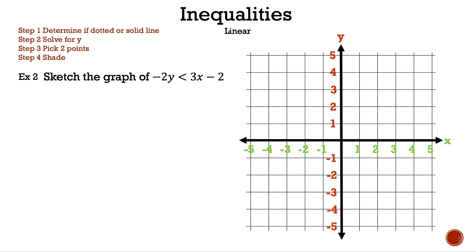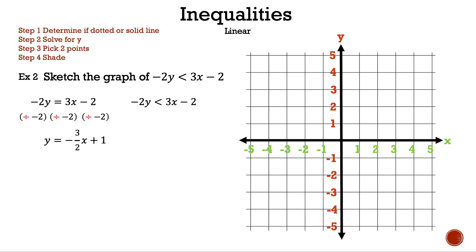Well, how do we solve for this inequality? Let's write down an equation and inequality with the same terms to find out. Since y is almost by itself, let's solve for y so we can see the slope and the y-intercept easier. The first step is to divide the left side by negative 2, which means we divide each term on the right side by negative 2. Our result is y equals negative 3 halves x plus 1. Remember, when we divide by negative numbers in inequalities, we have to flip the sign — that is why we have greater than and not less than.